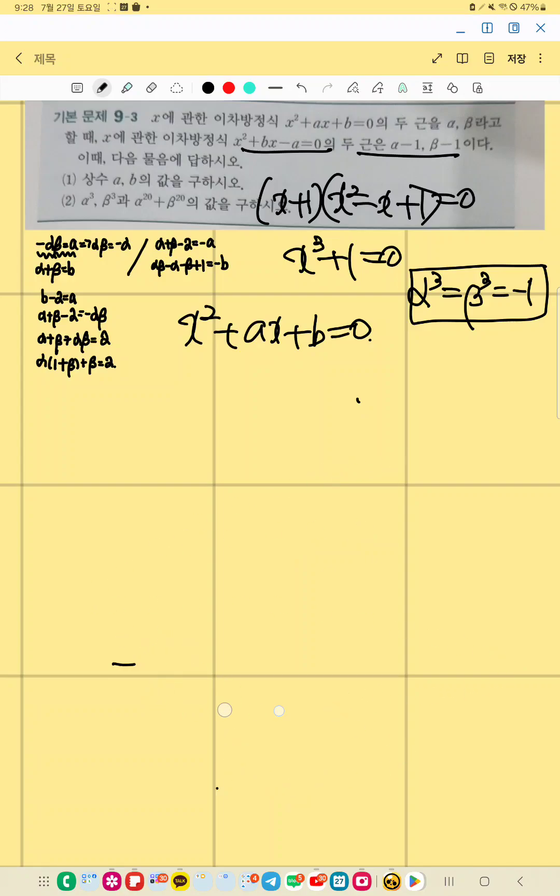And finally, we want to find alpha to the power of 20 and beta to the power of 20. This is using power law. 3 times 6 is 18, times alpha, alpha square. So beta 3 is 6, beta 2.